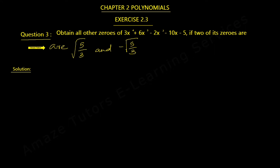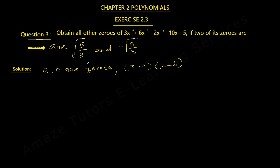We know that whenever the roots or zeros are given, we can write them as binomial factors. For example, if a and b are the zeros, the binomial factors are (x - a) and (x - b). Same manner for this question: for √(5/3) that means (x - √(5/3)) is one of the binomial factors, and the other one is (x + √(5/3)).